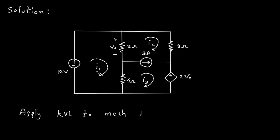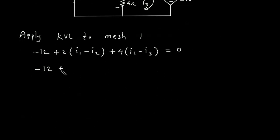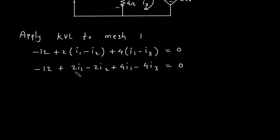So according to the direction of this current, this will be positive, this will be negative. Starting from here: minus 12, then plus 2(I1 minus I2), plus 4(I1 minus I3) is equal to 0. This simplifies to minus 12 plus 2I1 minus 2I2 plus 4I1 minus 4I3 equals 0. Let's say this is equation number 1.